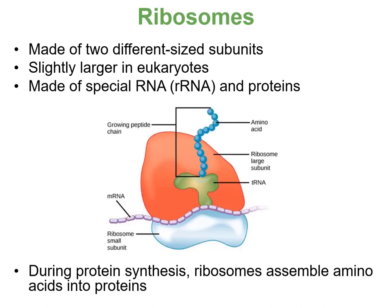Our ribosomes are present in both prokaryotes and eukaryotes — they are our protein synthesizers. They're made of two different-sized subunits and are slightly larger in eukaryotes than in prokaryotes. They're composed of ribosomal RNA (rRNA) and proteins. During protein synthesis, ribosomes assemble amino acids into proteins.